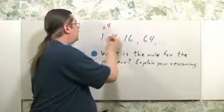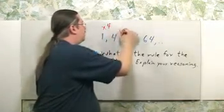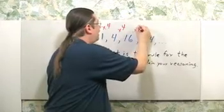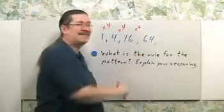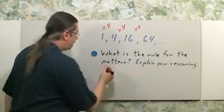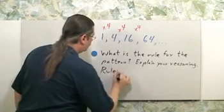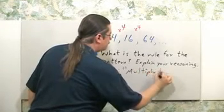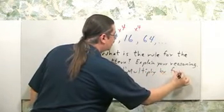Let's try that. 1 times 4 is 4. 4 times 4 is 16. Hey, I think I see a pattern here. Times 4 is going to be 64. So the rule is going to be multiply by 4.